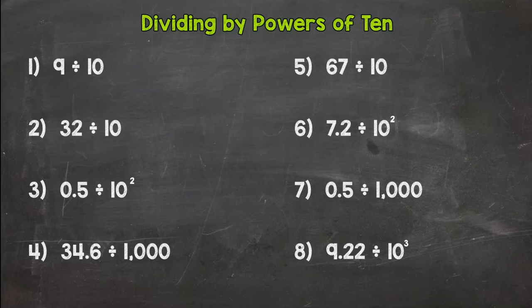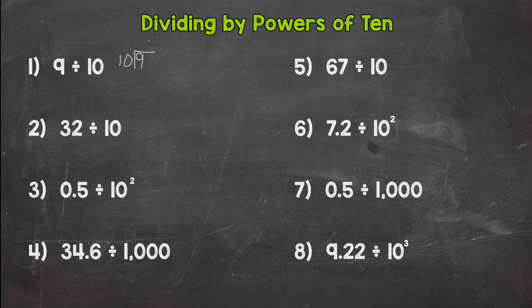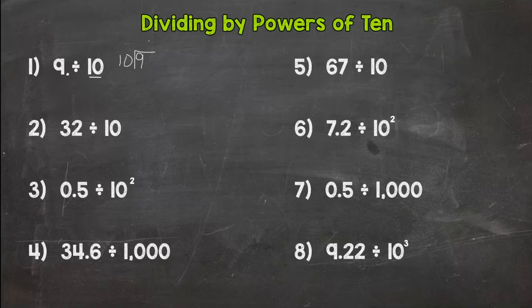So let's get into number one. We have 9 divided by 10. What this would look like if we set it up as a long division problem would be 9 divided by 10. But our divisor is a power of 10, so we can just move the decimal point in the 9 in order to push it to the correct place and get the right answer. So where does the decimal go for a whole number? Hopefully you are thinking right after the whole number. So a decimal for a 9 would be right there. Just like when we multiply by powers of 10, you either look at the exponent or number of zeros in your power of 10.